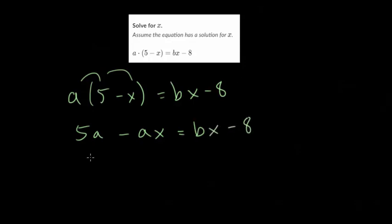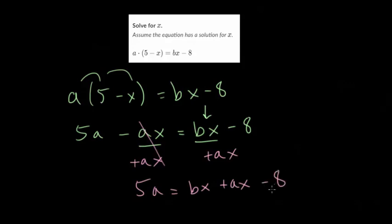Now we want to get all the x terms on the same side. Get rid of parentheses, group all the x terms or whatever variable you're solving for on the same side. If you move it to the b times x side, you'll avoid negative numbers for now. So instead of subtracting ax, I want to do the opposite so that I can cancel it out. So I'm going to add ax to each side and minus ax plus ax, that's just zero. So you get five a is bx plus ax minus eight.